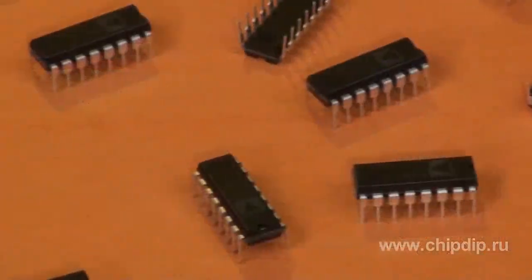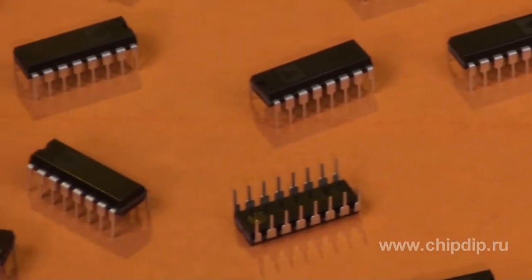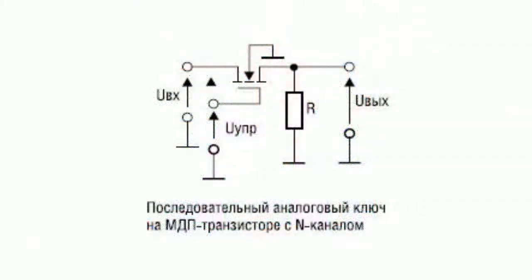Analog electronic switches and multiplexers form the basis of various switchboards intended for data transmission with minimal losses and distortion. The key element of these devices is the MIS-type device. Due to low resistance in closed state, high resistance in open state, low leakage current and small stray capacitance, MIS-type devices are successfully used as analog switches controlled by voltage.